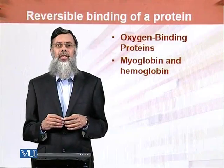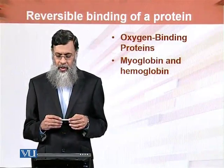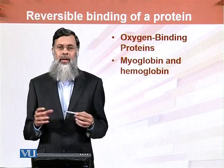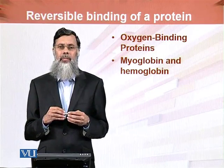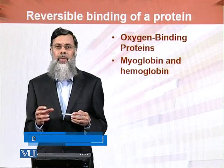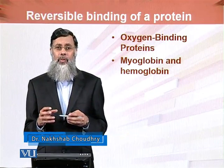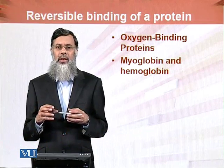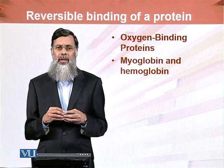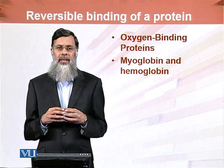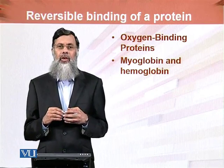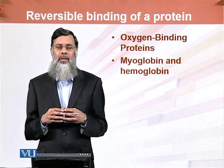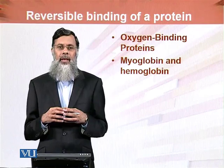We are continuing with the reversible binding of proteins — oxygen binding proteins, myoglobin and hemoglobin. Many proteins are reversibly binding, like antigen, antibodies, and hormones. We cannot discuss each and every molecule required for reversible binding separately. So, as a prototype, we will discuss myoglobin and hemoglobin in detail, which will serve our purpose to understand the reversible binding of proteins.